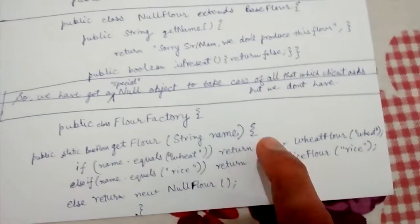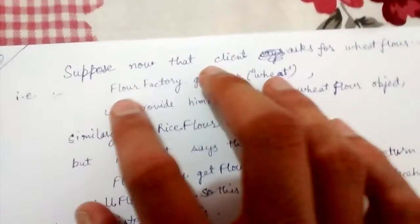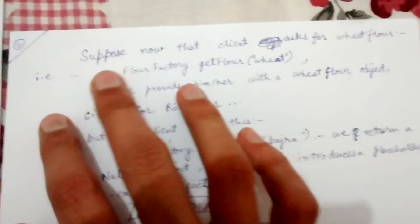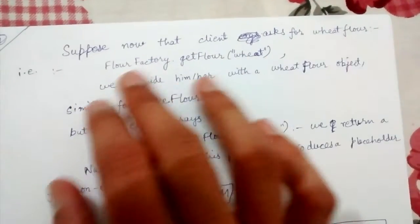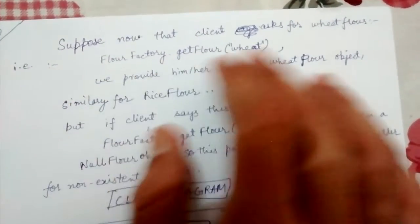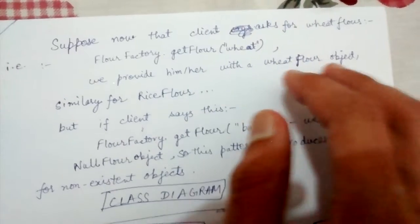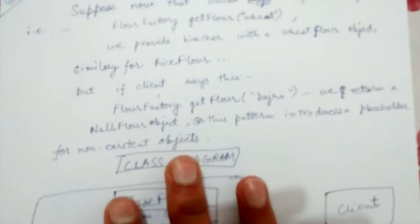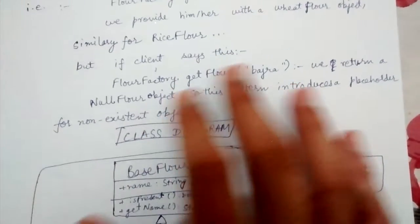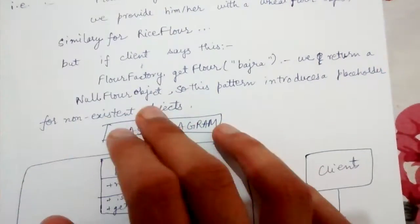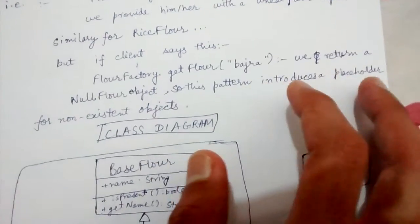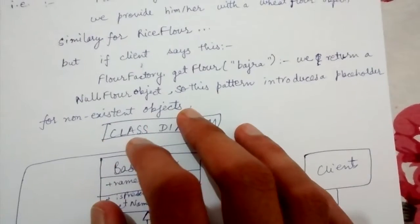Now let's look at how the client uses this. Suppose the client asks for wheat flour by calling FlourFactory.getFlour('wheat')—we provide a WheatFlour object. Similarly for rice flour. But if the client calls FlourFactory.getFlour('bajra'), we return a NullFlour object. This pattern introduces a placeholder for non-existent objects.